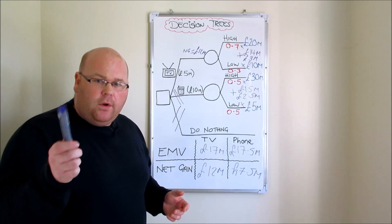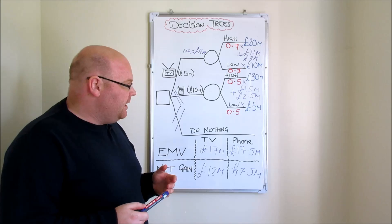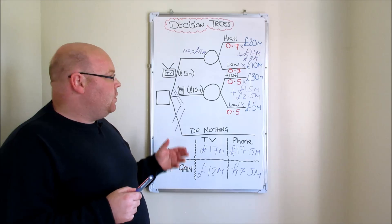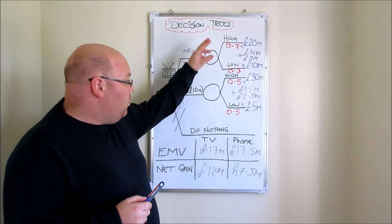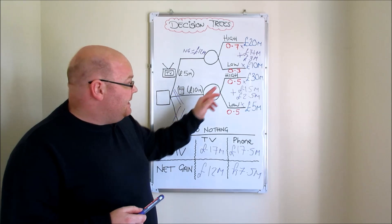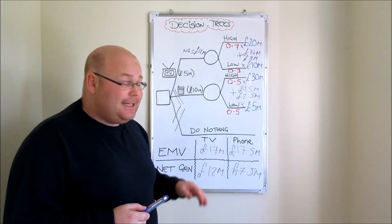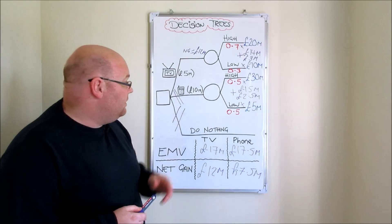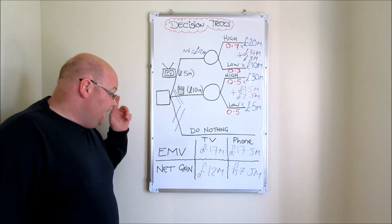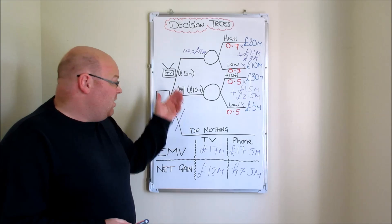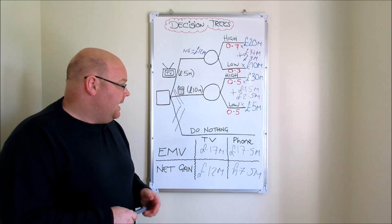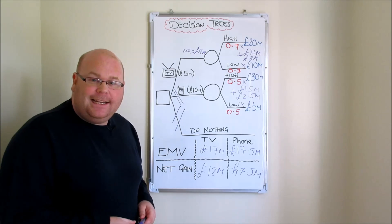Rather than using hunches or experience, we've let data do the decision making for us. In a future tutorial we'll look at the value of decision trees and whether the data we input is always reliable — and whether it might cause us to miss the most lucrative possibility. But that's how we do it in the exam: you could be asked to calculate the Expected Monetary Value, or the net gain, and we can now do both. It's worth doing some practice activities — see you next time.